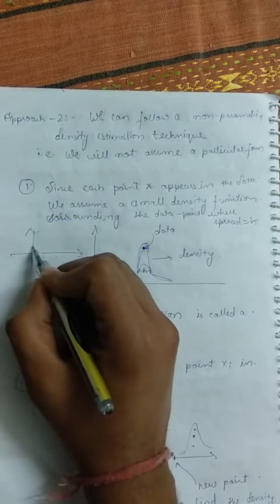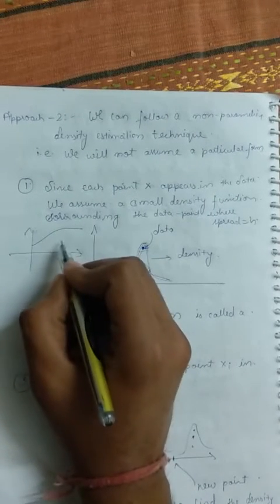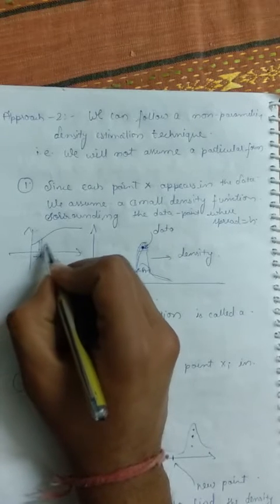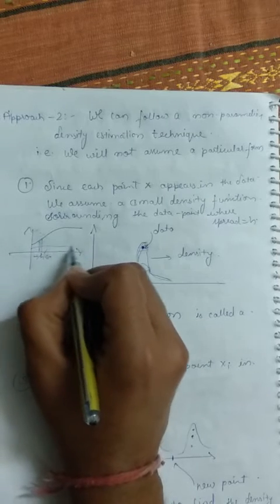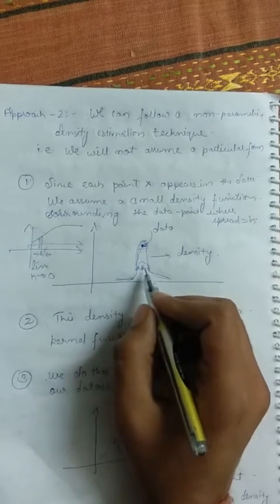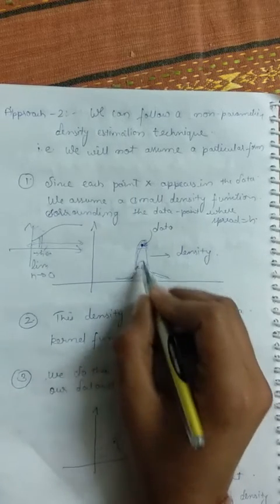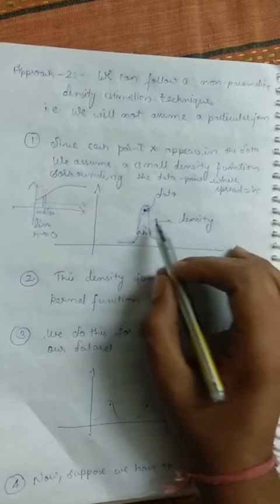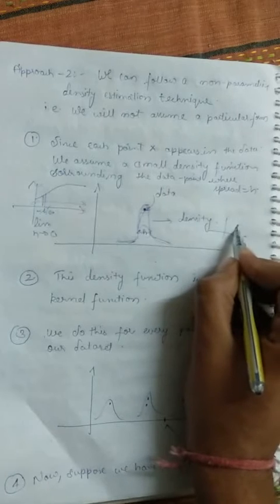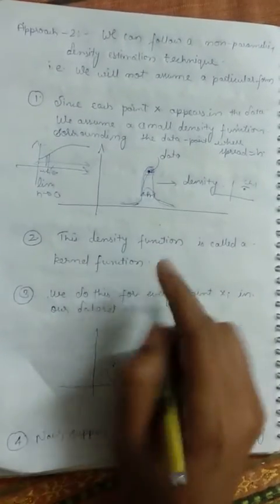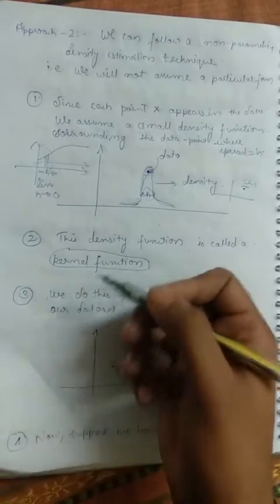This is similar to how we define area under the curve in integral calculus. We approximate a curve's area using small rectangles of width h, sum their areas over the entire interval, and apply the limit as h tends to zero. The same idea applies here: we approximate a small density for a very small width h around each data point. The choice of the density function is ours — we can assume it is a normal distribution around the point, a linear function over duration h, or some other form. This assumed density function is called a kernel function, hence the name kernel method for density approximation.